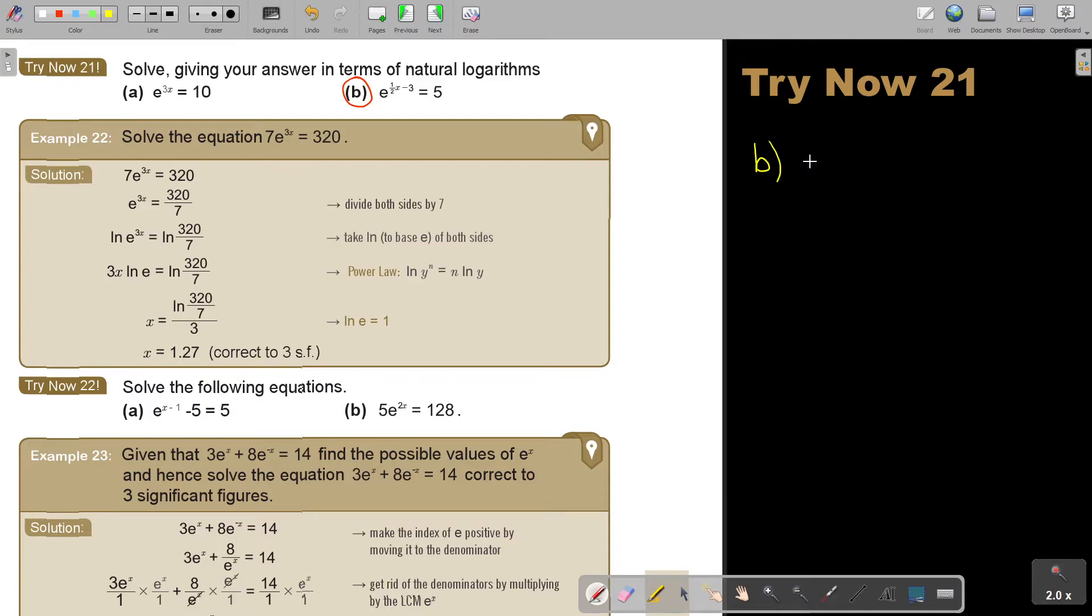Number b: e to the power a half x minus 3 is equal to 5. So then I make it lin. You keep the e and you basically swap that too. So it's going to be lin 5 is equal to a half x minus 3. So let's just bring this over so it's lin 5 plus 3 is equal to a half x.